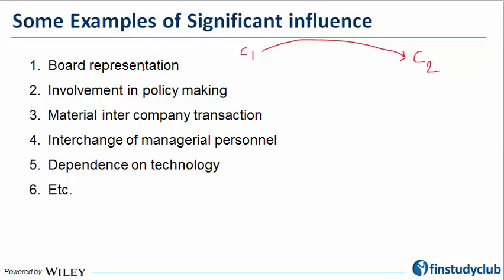Point one: if C1 is given board representation on C2. Why would C2 give board representation? Obviously only when C1 has significant influence. Point two: when C2 is allowing C1 involvement in its policy making — that is pretty clear.